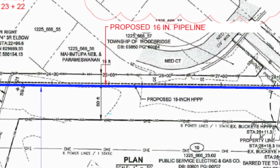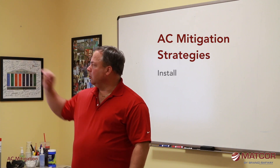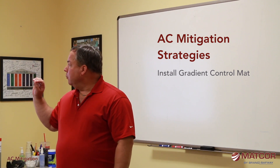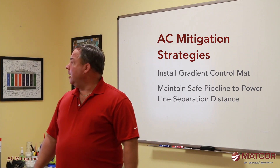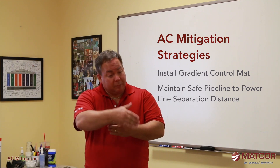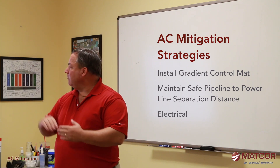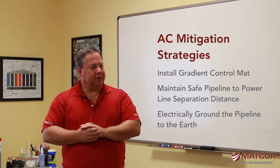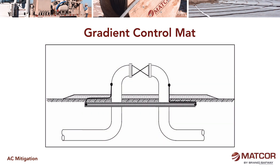This blue line represents the grounding mitigation line. Our AC mitigation strategies are typically: install a gradient control mat at pipeline locations where people can touch the pipeline; maintain safe pipe-to-pipeline distances to avoid arcing problems; during fault conditions, if we are too close, put in some sort of shield so that current dumped into the earth is picked up by the shield and deflected away from the pipeline; and provide grounding of the pipe to earth to dissipate current being picked up during steady-state conditions.